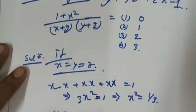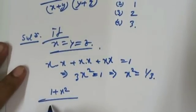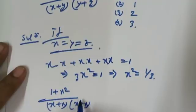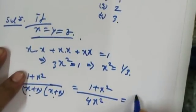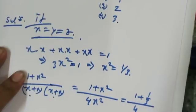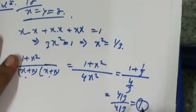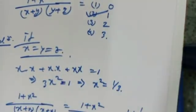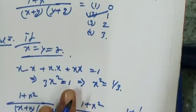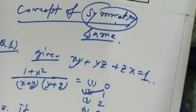Now putting x² = 1/3 into the expression: (1 + x²) / (x + x) × (x + x) = (1 + 1/3) / (4x²) = (4/3) / (4/3) = 1. So 1 is the correct answer — option number 2.